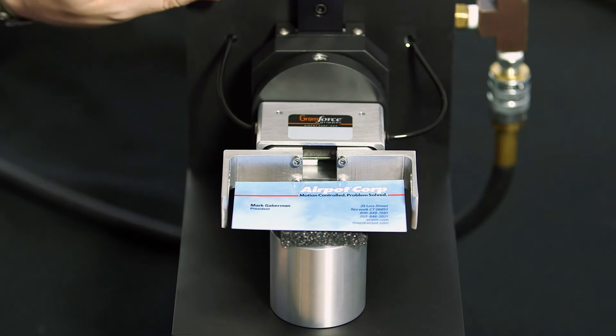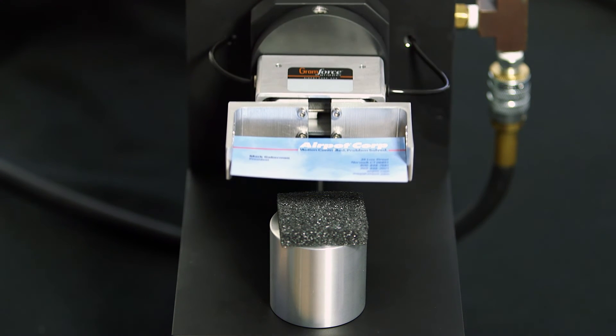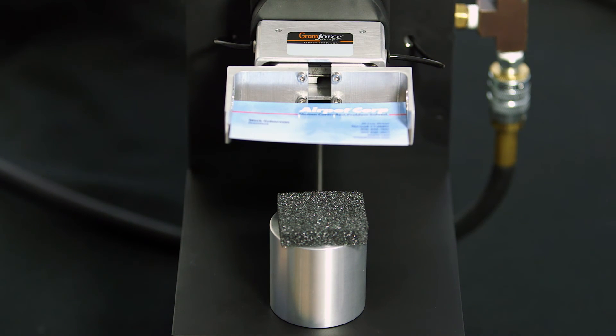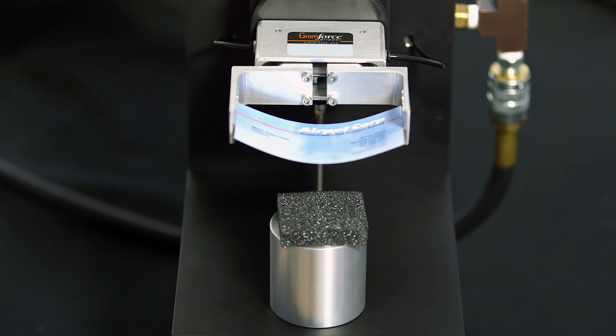Here, we are squeezing a typical business card at 25 grams of force. You can see it's being held without deflection, but begins to bend as we slowly increase the clamping force to about 85 grams, where it eventually buckles.